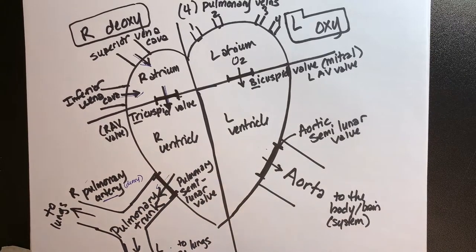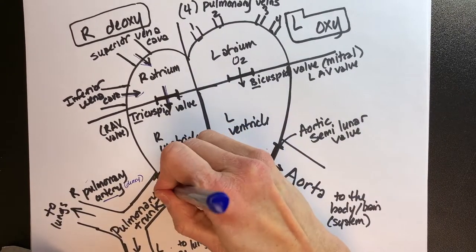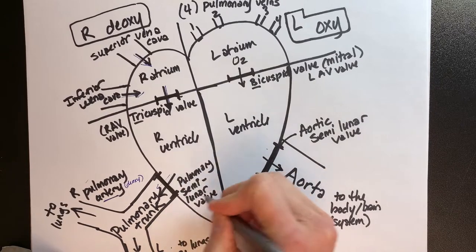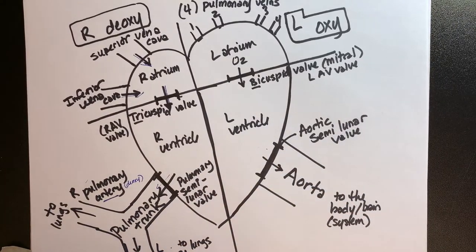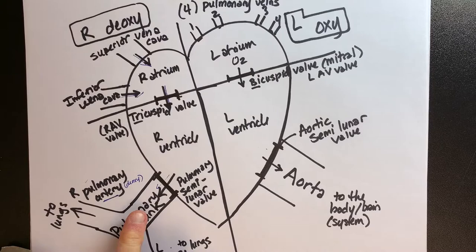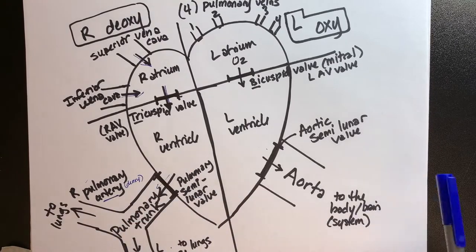We have to close a door after we leave the right ventricle. Here it is: the pulmonary semilunar valve. We need to close that door so that blood doesn't try to come back from the pulmonary trunk and go into the right ventricle.